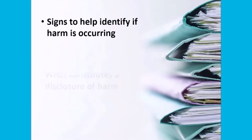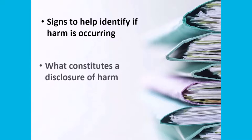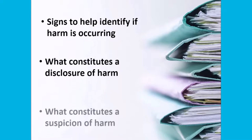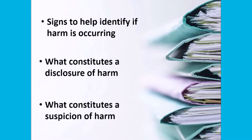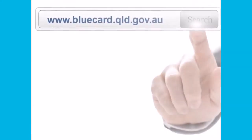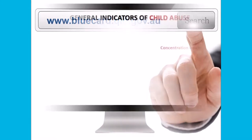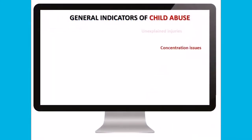Your organization should also include information about the signs to help identify if harm is occurring, what constitutes a disclosure of harm, and what constitutes a suspicion of harm. The toolkit which is available on the risk management page of the Blue Card Services website provides useful materials, including a list of indicators of child abuse, which will assist you further.